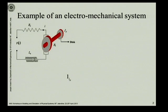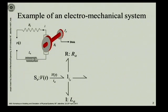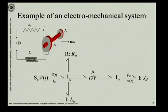This is the example we saw yesterday where we placed the different elements. This was the electrical side for the electromechanical system of the DC motor. We had the electromagnetic effect provided by the gyrator, and then on the output side we had the rotary motion of the disc, the change in the angular momentum, and we had the gyrator modulus here — we have called it mu. So this is what is responsible for the conversion of current on the armature side to torque on the mechanical side, and that relationship is provided here.